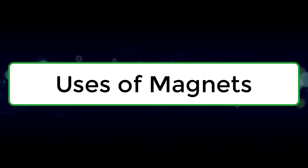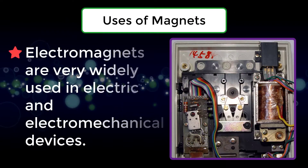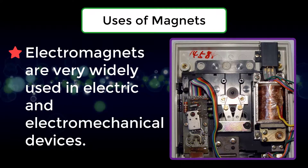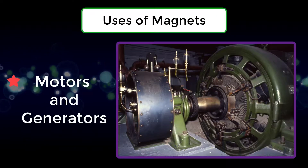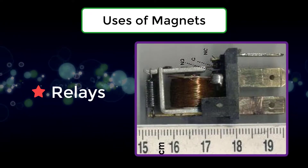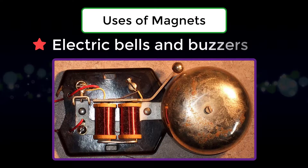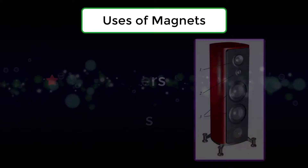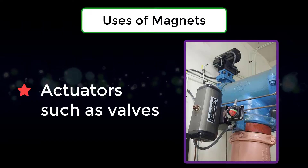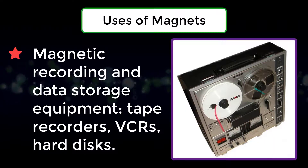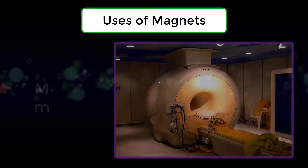Uses of Electromagnets: Electromagnets are very widely used in electric and electromechanical devices including motors and generators, transformers, relays, electric bells and buzzers, loudspeakers and headphones, actuators such as valves, magnetic recording and data storage equipment, tape recorders, VCRs, hard disks, and MRI machines.